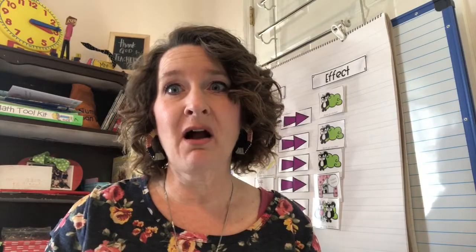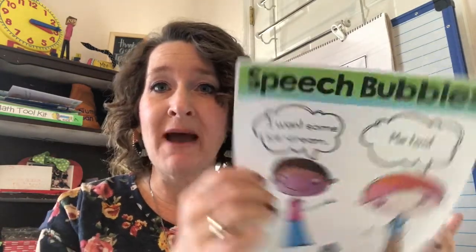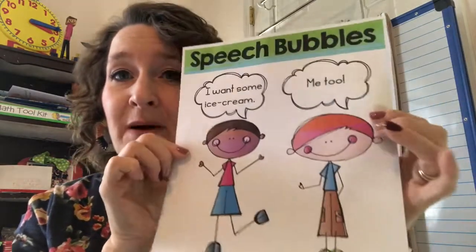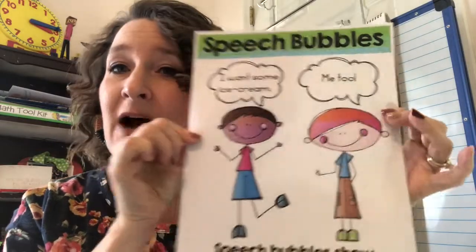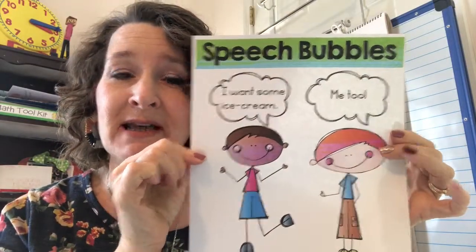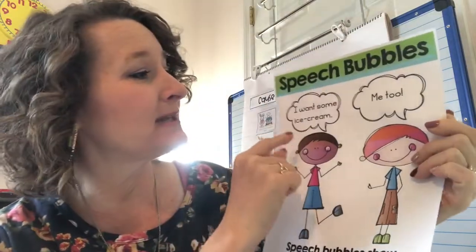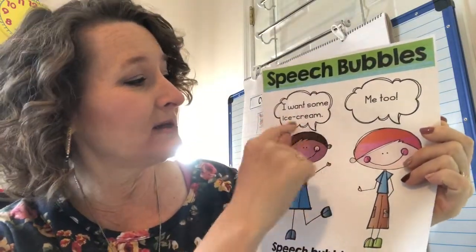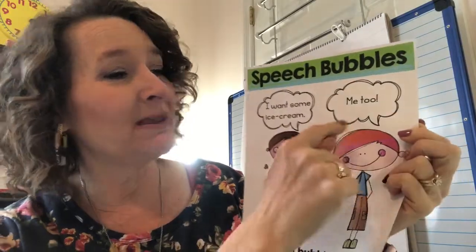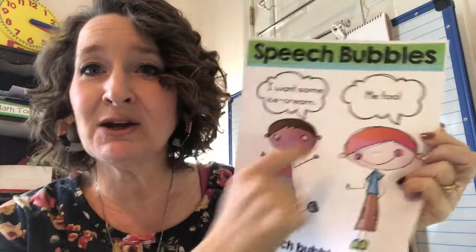Today I want to continue thinking about our stories that we've started. Remember, we're doing our slice of the pie stories. I talked to you about speech bubbles — how we can put a speech bubble above someone's head. Like this boy says, 'I want some ice cream,' and the other one's like, 'Me too.'